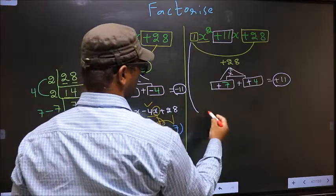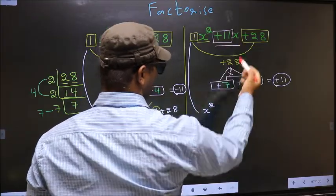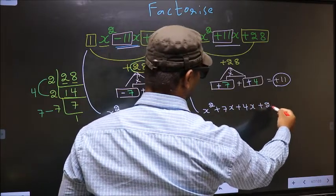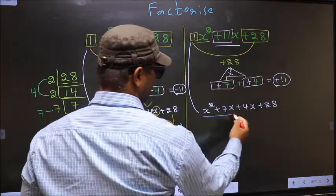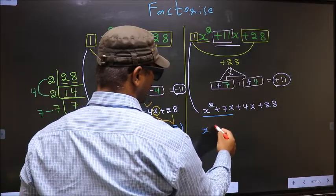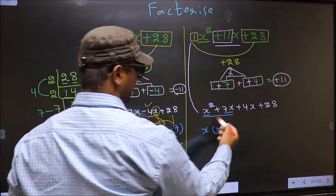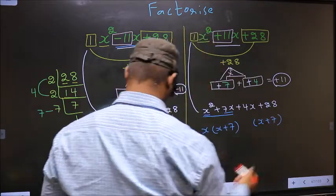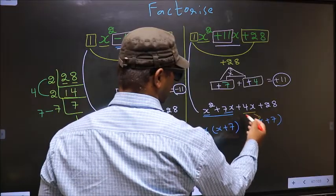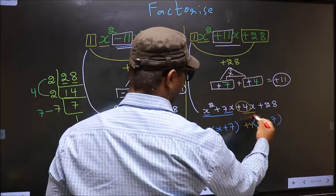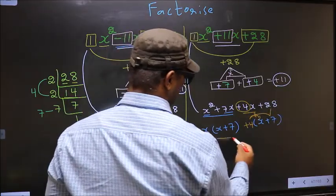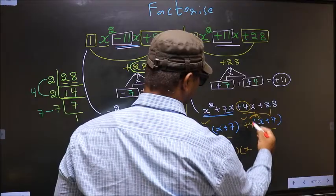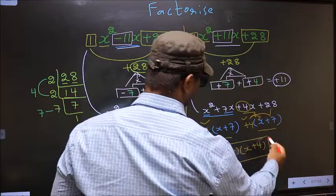Now for x squared plus 11x plus 28, in place of plus 11x, we write plus 7x plus 4x plus 28. From the first two terms, what can be taken out common? x. So we get x times (x plus 7). From the remaining terms, x has gone inside, so outside you get plus 4, giving plus 4 times (x plus 7). Now taking x plus 7 common, the answer is (x plus 7)(x plus 4).